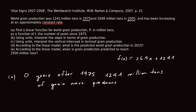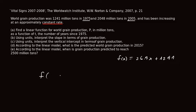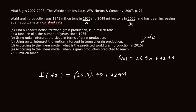For part D: according to the linear model, what is the predicted world grain production in 2015? We use our formula from part A. The year 2015 is 40 years after 1975 — since 2005 was 30 years after 1975, 2015 is an additional 10 years, giving 40. Don't plug in 2015 directly; plug in 40. So we calculate f(40) = 26.9 times 40 plus 1241, and evaluate with a calculator.